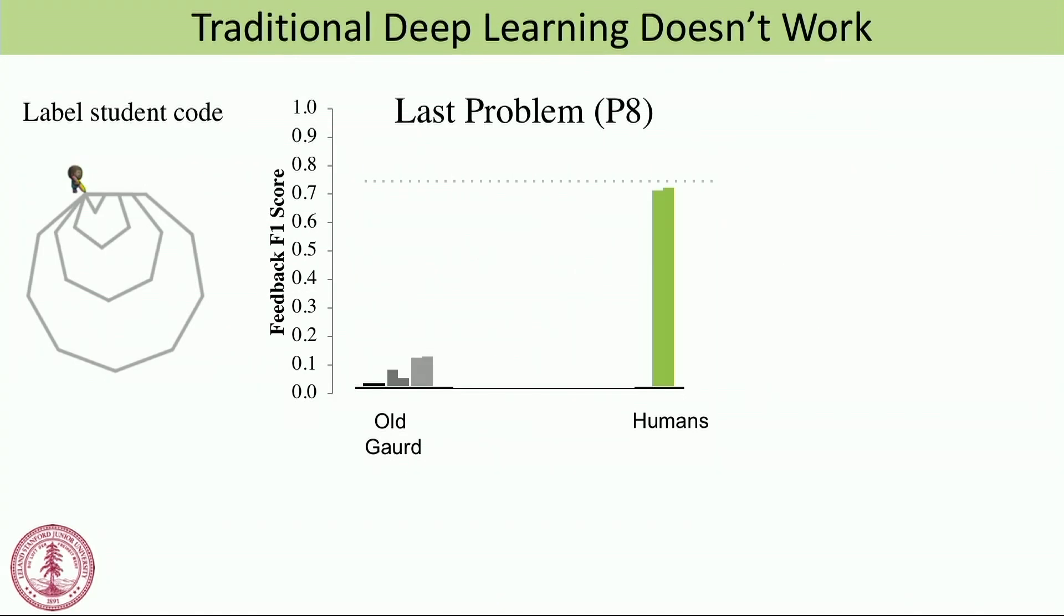Humans do pretty well at it. If you give the same assignment to two different Stanford TAs, they'll largely give you the same feedback.